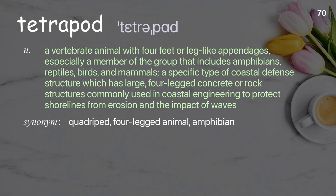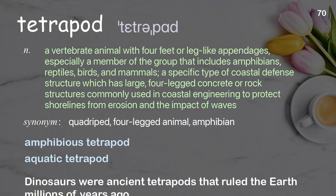Tetrapod: a vertebrate animal with four feet or leg-like appendages, especially a member of the group that includes amphibians, reptiles, birds, and mammals; also a specific type of coastal defense structure with large, four-legged concrete or rock structures used in coastal engineering to protect shorelines from erosion. Examples: amphibious tetrapod; aquatic tetrapod. Dinosaurs were ancient tetrapods that ruled the Earth millions of years ago.